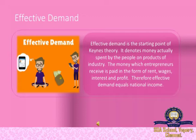An increase in aggregate effective demand would increase the level of employment. A decline in total effective demand would lead to unemployment. That means the total employment of a country can be determined with the help of the total demand of that country.